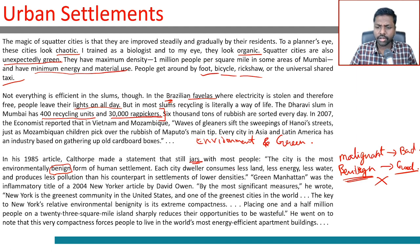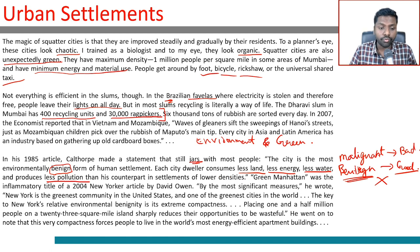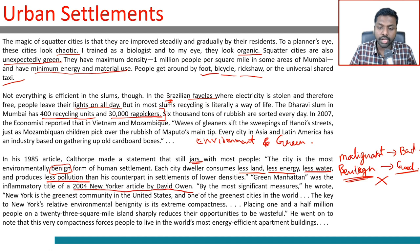Each city dweller consumes less land, less energy, less water, and produces less pollution than his counterpart in settlements of lower densities. 'Green Manhattan' was the title of a 2004 New Yorker article by David Owen. He wrote that New York is the greenest community in the United States and one of the greenest cities in the world.